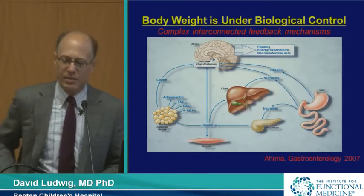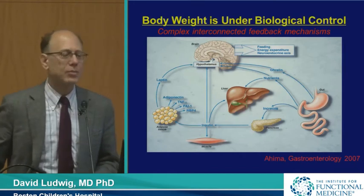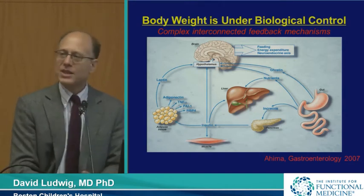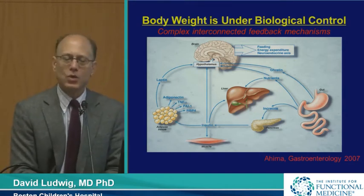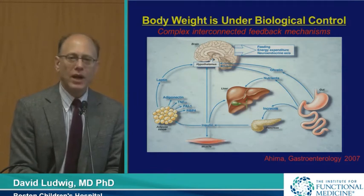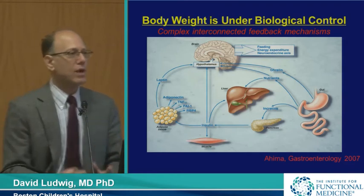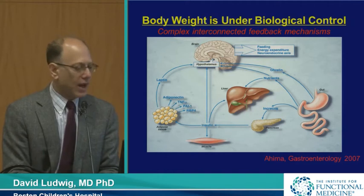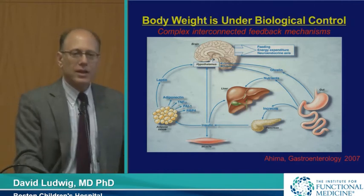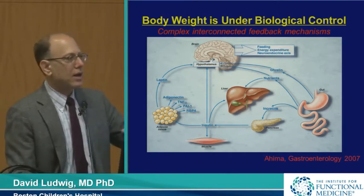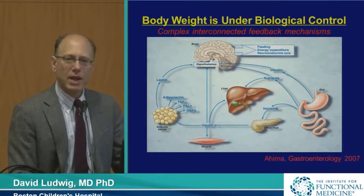An obvious problem with this paradigm is that it neglects a basic biological fact known in the research laboratory for essentially a century, but one that seems not to have penetrated the weight loss clinic or public health realm: body weight is controlled by a series of primal and redundant feedback loops involving critical organs — the brain, fat cells, liver, gut, muscle, pancreas — along with hormonal signals, neurological influences, and metabolic signals that connect them.